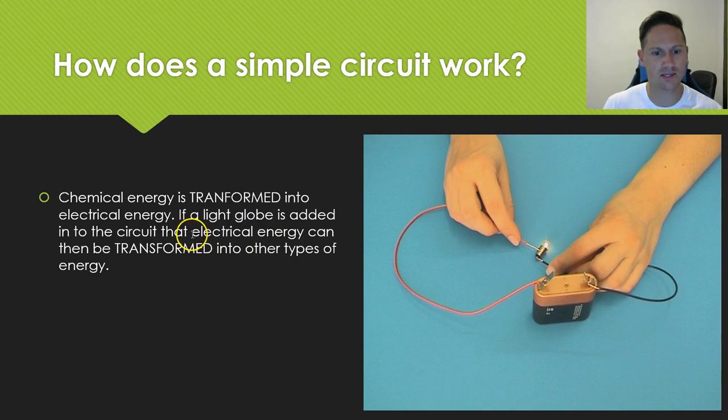So if a light globe is added to the circuit, that electrical energy can be transformed into other types of energy. How many types of energy can you name, by the way? So we just talked about light, electricity as a type, chemical energy as a type. How many more can you name?